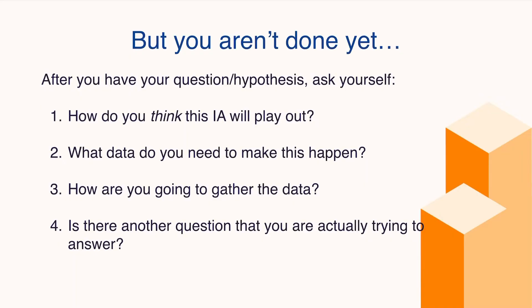Now for the four bonus questions I promised. Hopefully you've got some IA ideas, a grouping, a theme, and a question you might want to answer. Here are four questions to ask yourself: How do you think this IA is going to play out? What data do you need to make this happen? How are you going to gather this data? And is there another question you're actually trying to answer?